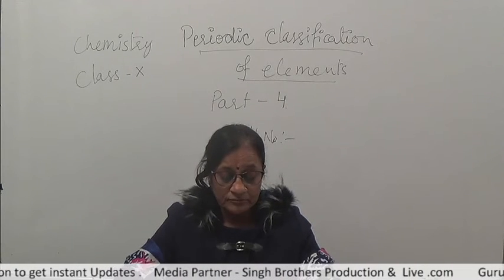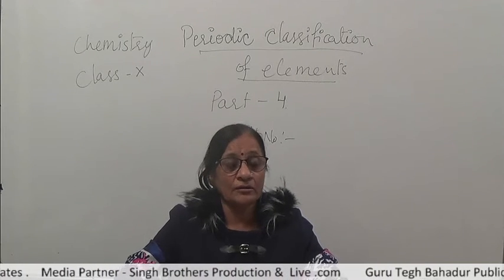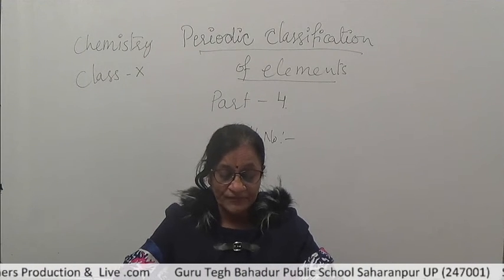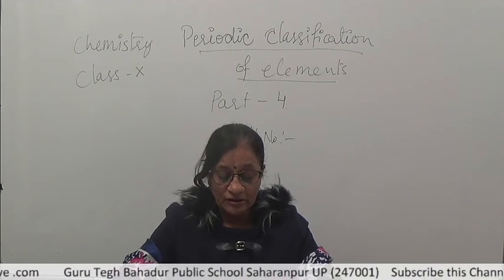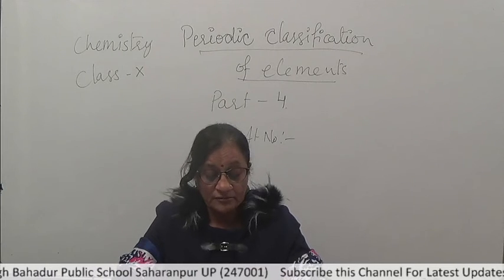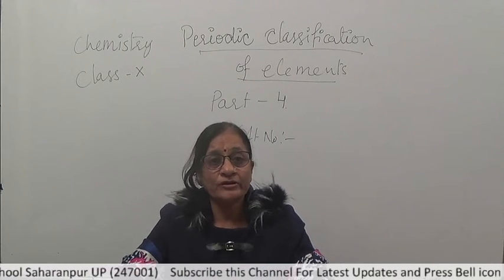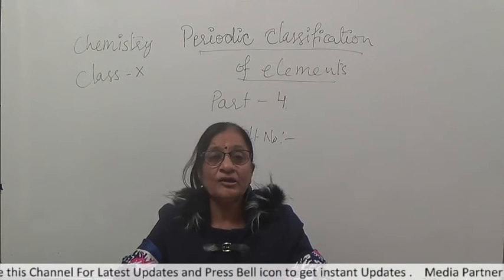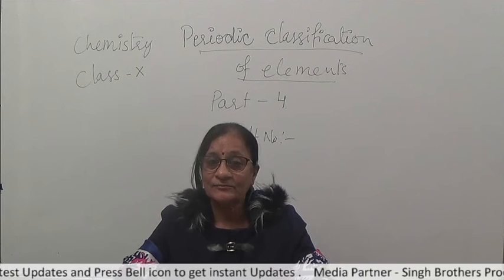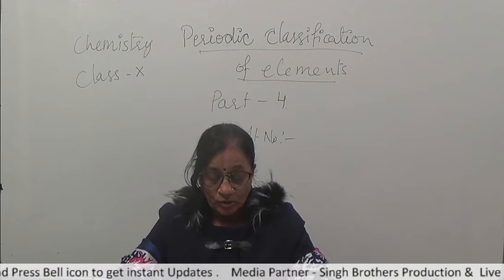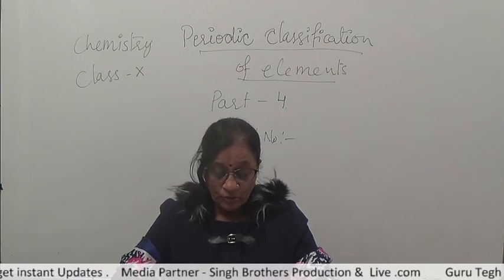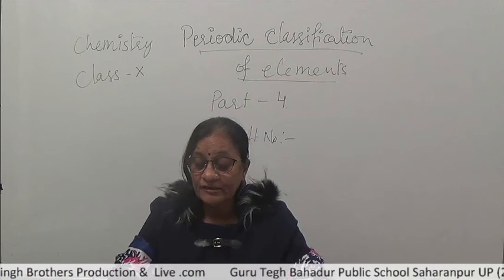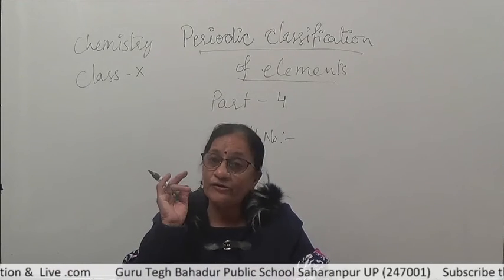The second problem in Mendeleev's periodic table was the wrong order of atomic masses — some elements were placed incorrectly based on atomic masses. In the modern periodic table, this is resolved. For example, cobalt and nickel were earlier placed in the same spot because they both have an atomic mass of 59. But when we consider atomic number, cobalt is 27 and nickel is 28, so they are placed in two different groups in the modern periodic table.